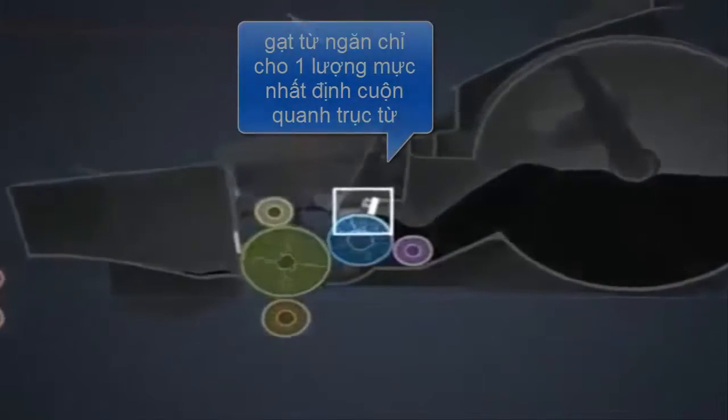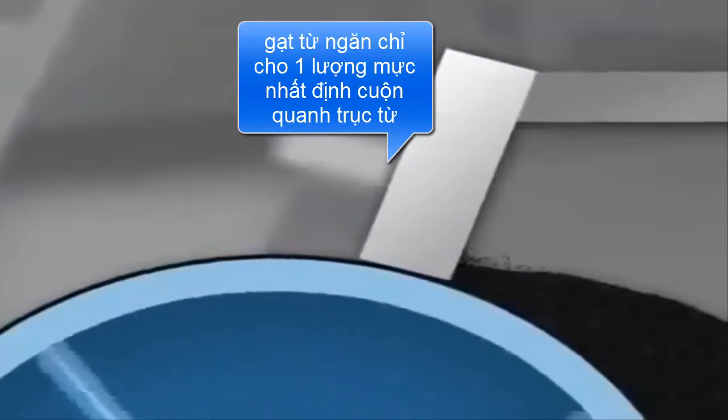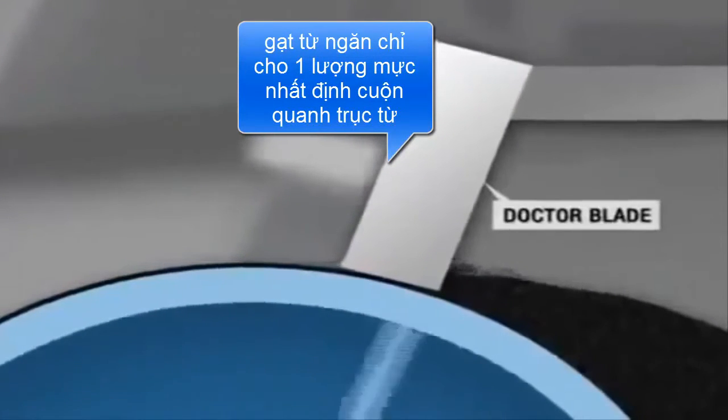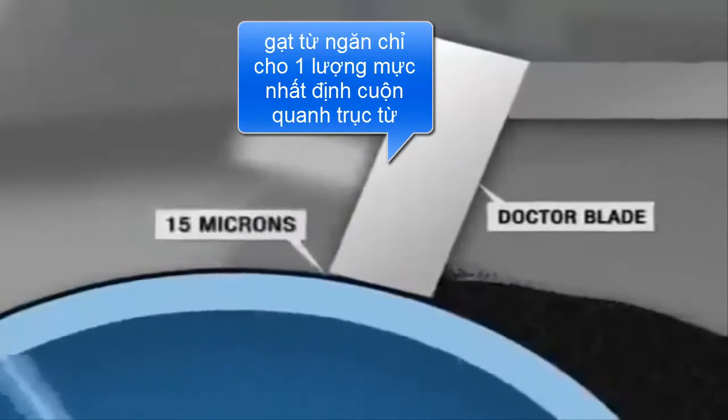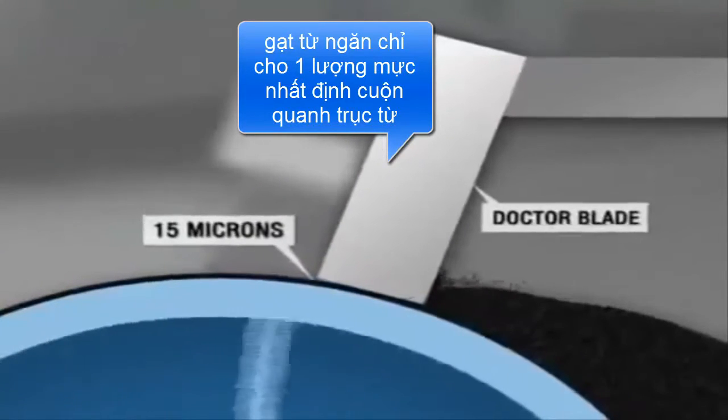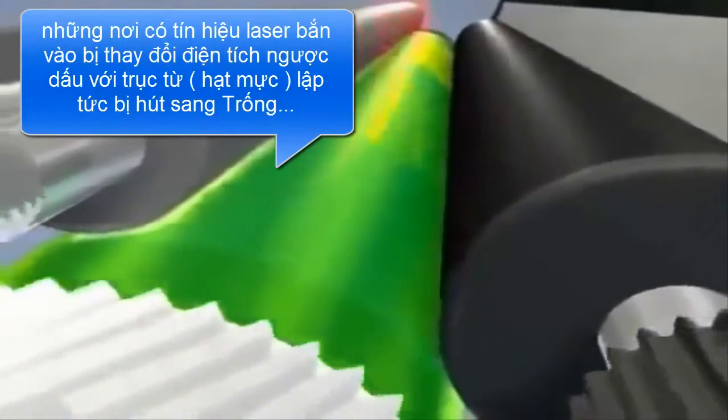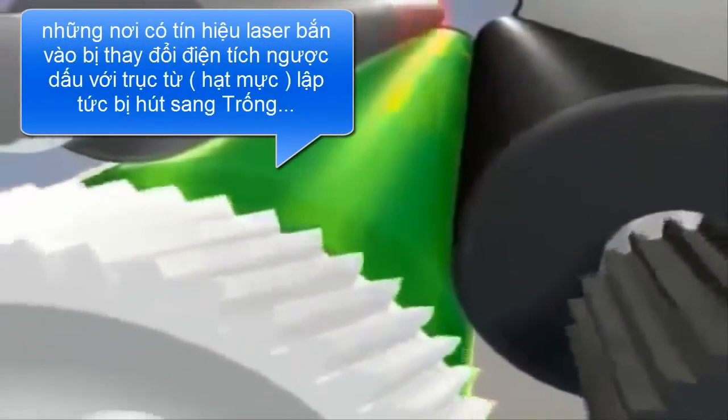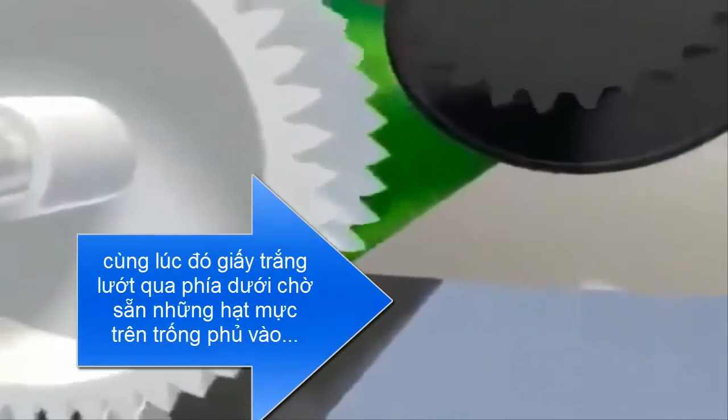As the toner is placed on the developer roll, a leveling device called a doctor blade evens the toner to a thickness of approximately 15 microns, just slightly thicker than a strand of silk. As the developer roll and photoconductor drum come into contact, the negatively charged toner is attracted to the discharged areas of the drum.